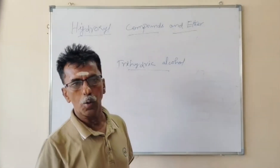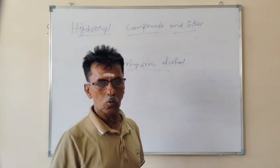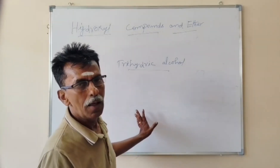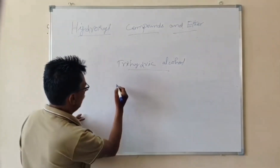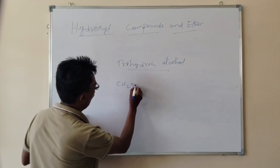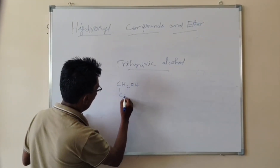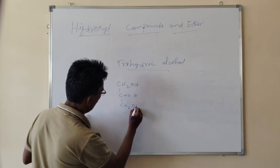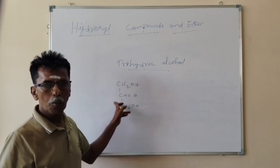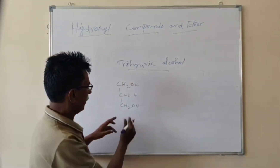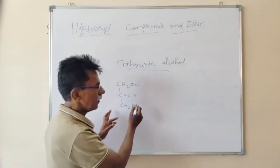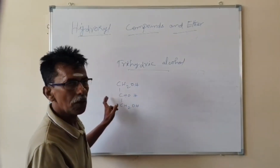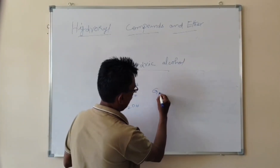If any organic compound containing three OH groups in the same molecule, it is called a Trihydric Alcohol. This compound contains three OH groups in the same compound, so this is an example of Trihydric Alcohol. The name of this alcohol is called glycerol.